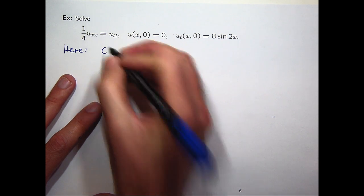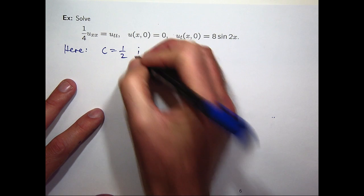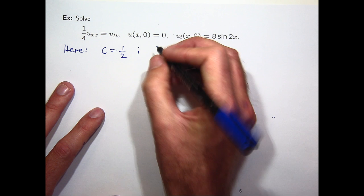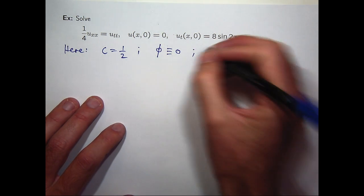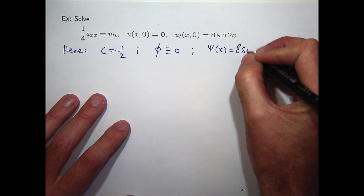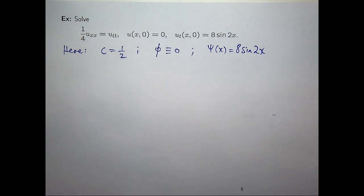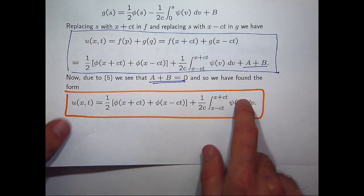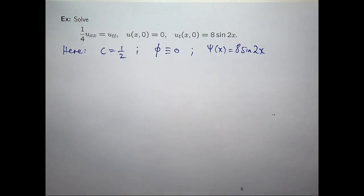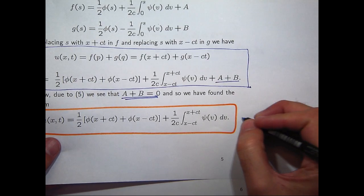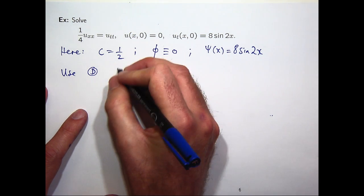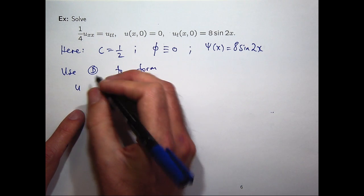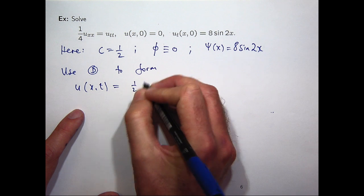So, let's see if we can solve that and use d'Alembert's solution just to form a general solution to this problem. c squared is one quarter and we're assuming c is positive. So, the wave speed is just a half. The initial displacement is just the zero function. So, it's just identically equal to zero. And the initial velocity is just given by eight sine two x. So, all we need to do is use this format, d'Alembert's form, and solve.